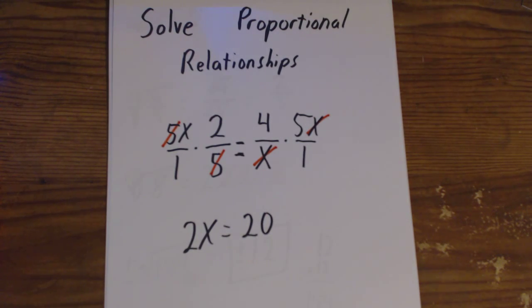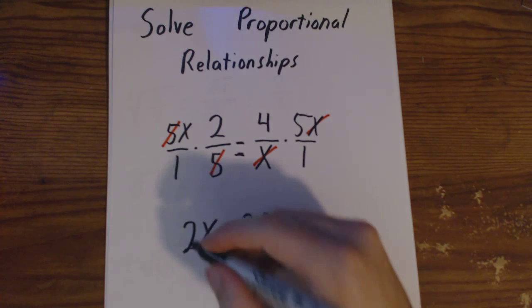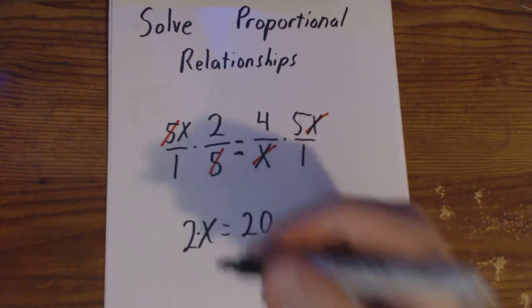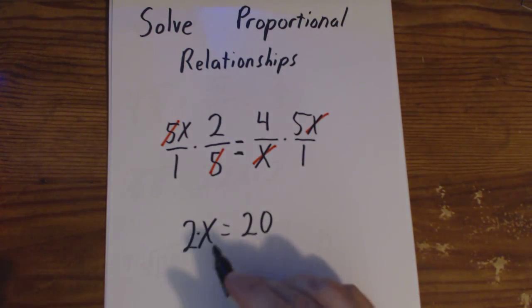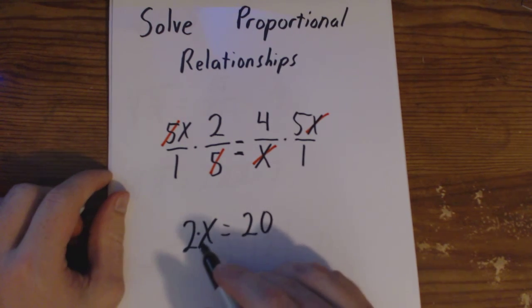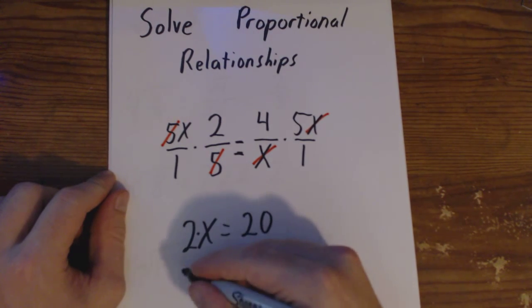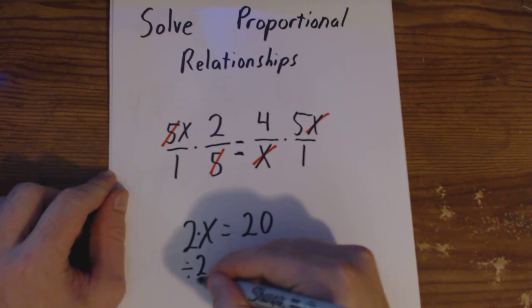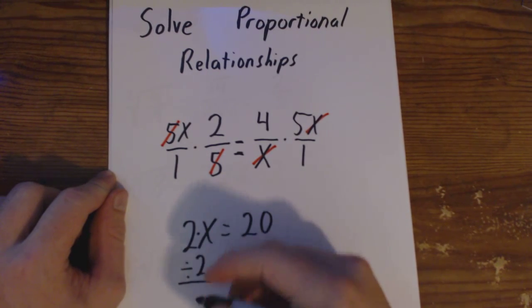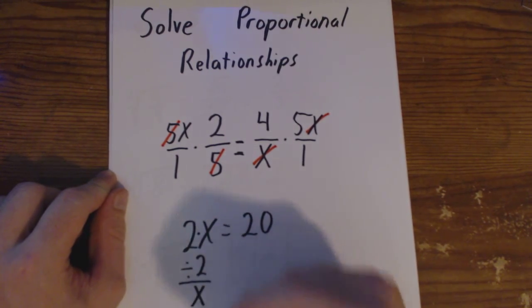Now if we're trying to solve for x, we want to get x by itself. We have 2x here. Now we don't subtract an x. What we can do is that this is x times 2. To get x by itself, we want to do the opposite. So instead of multiply, to get rid of multiplication, we're going to divide. 2x divided by 2 is just going to be x.